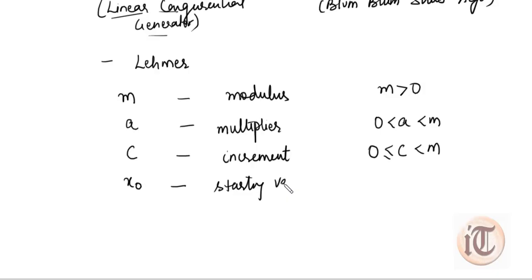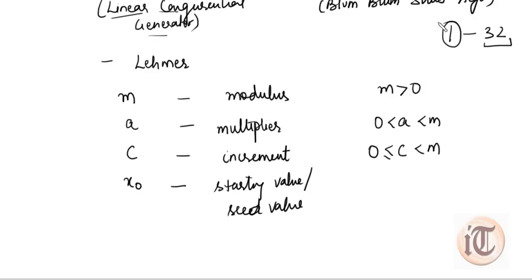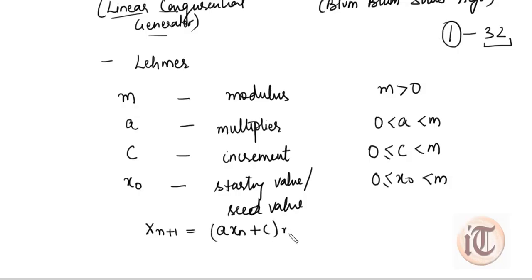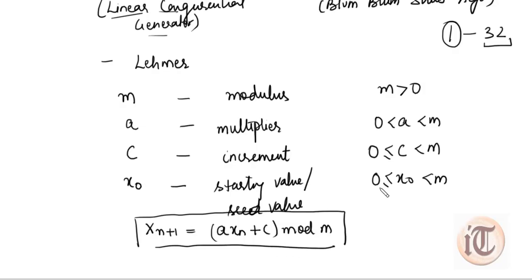X₀ is the starting value, also called the seed value. For example, if we have to calculate random numbers from 1 to 32, then X₀ is 1 and M is 32, giving the range for which we calculate pseudo random numbers. In the LCG algorithm, the four parameters are M (modulus), A (multiplier), C (increment), and X₀ (starting or seed value). The formula to calculate the next value is: X(n+1) = A·Xn + C mod M.